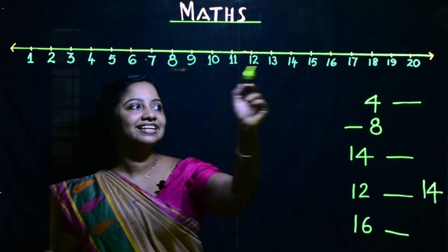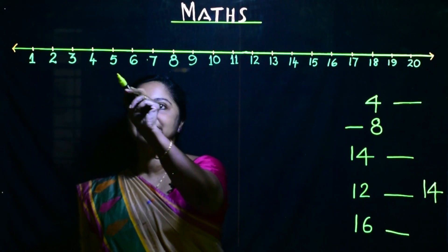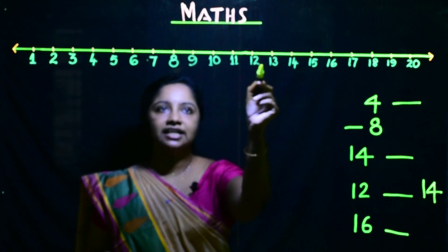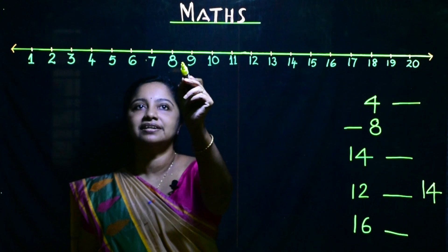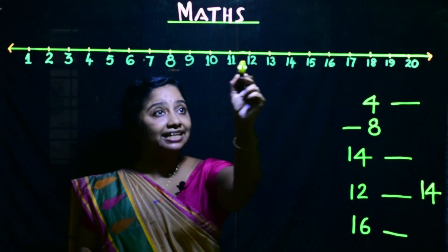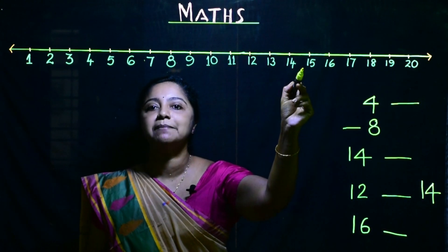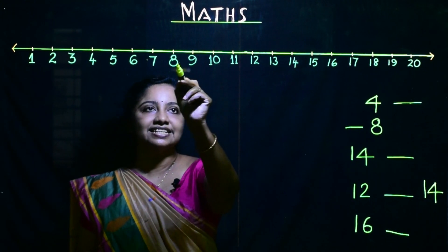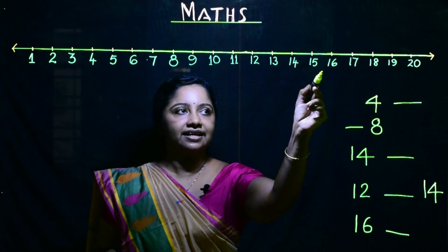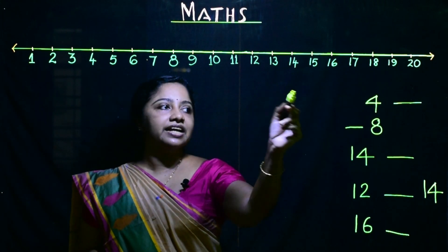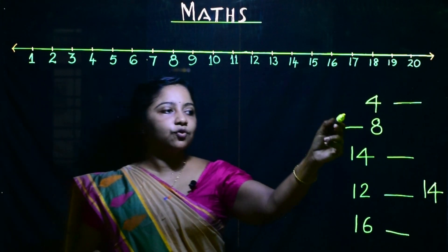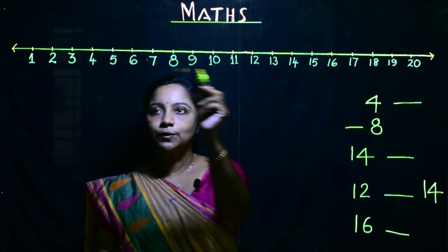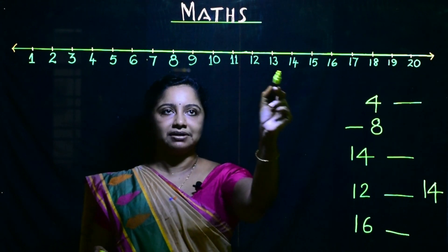Children, look at this line. Here the numbers are equally spaced. This line is known as a number line. What is this? This is a number line. We can write the before, after and between numbers using this number line.